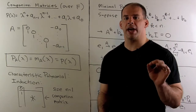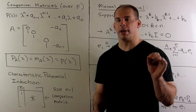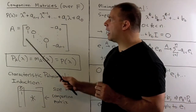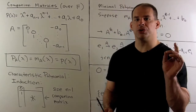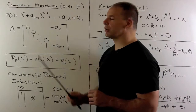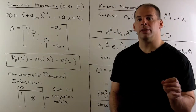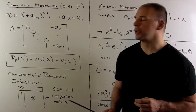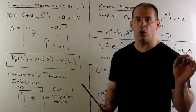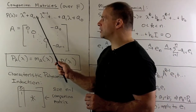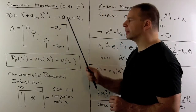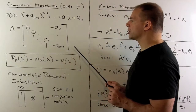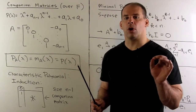Our first step is to understand companion matrices. We begin by choosing a monic polynomial p(λ) with coefficients in our field of degree n, with coefficients denoted a with a subscript matching the power of λ. To form the companion matrix A for p(λ), we start by putting 1s on the diagonal below the main diagonal. For the last column, we use the coefficients from our polynomial — ignoring the leading term, starting with a_{n−1} in the bottom and working our way up — then we put in minus signs, and 0s everywhere else. That is our companion matrix A for the polynomial p(λ).